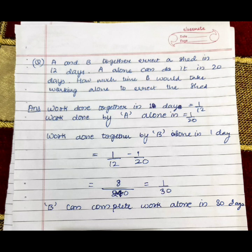In this question, the work done together in one day by both of them would be 1 upon 12 and the work done by A alone would be 1 upon 20. The work done alone by B in one day,